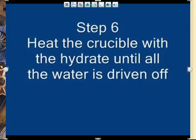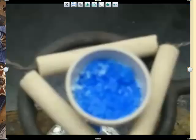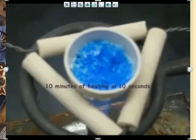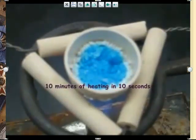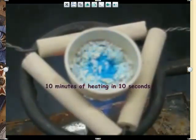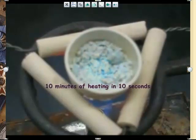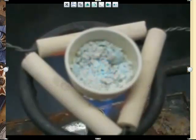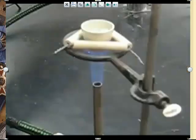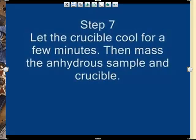So now what we're going to do is we're going to heat this sucker to get rid of the water. So we put it under the Bunsen burner, and you can see pretty neat camera work there, 10 minutes and 10 seconds. And you can see this particular hydrate is neat because it changes color. It goes from blue to white. So now we've driven off the water. We've broken that weak bond between the CUSO4 and the water, and we've got to let it cool again.